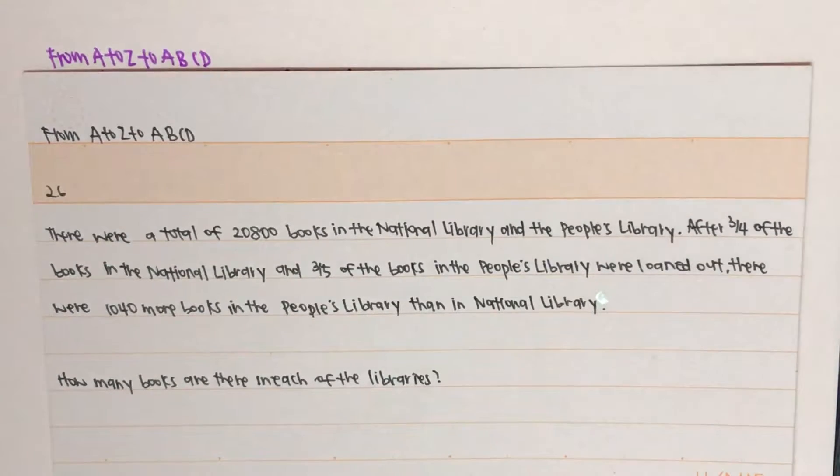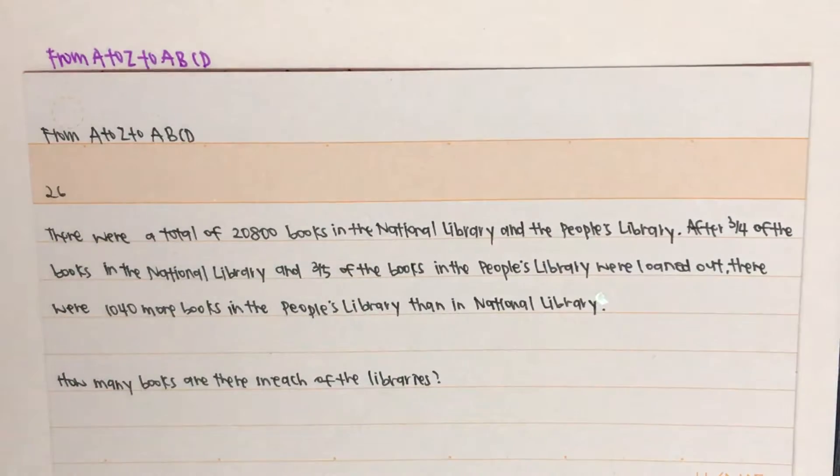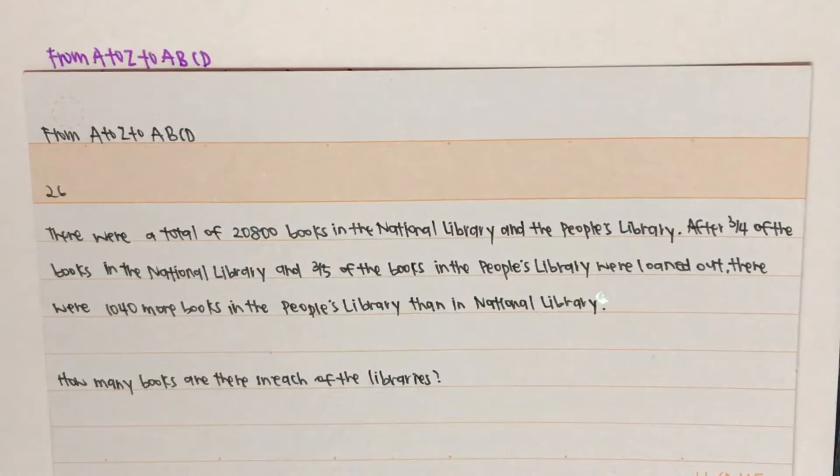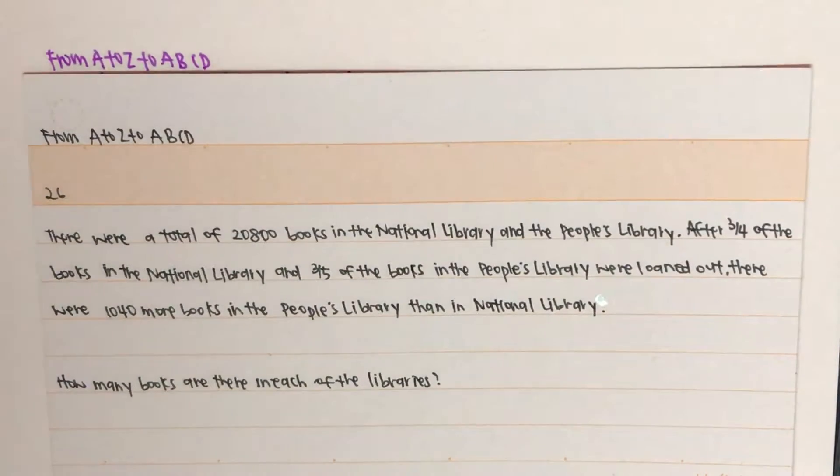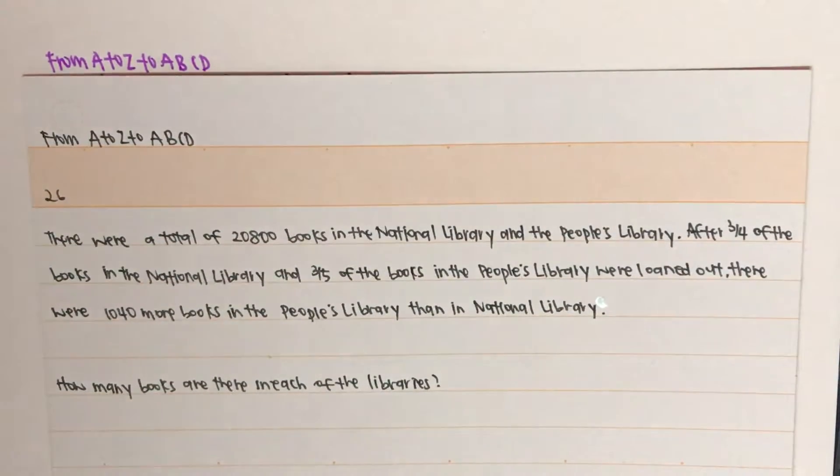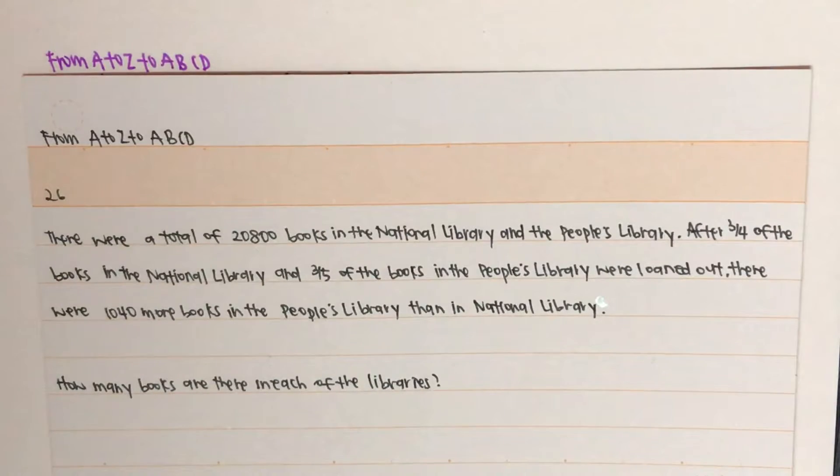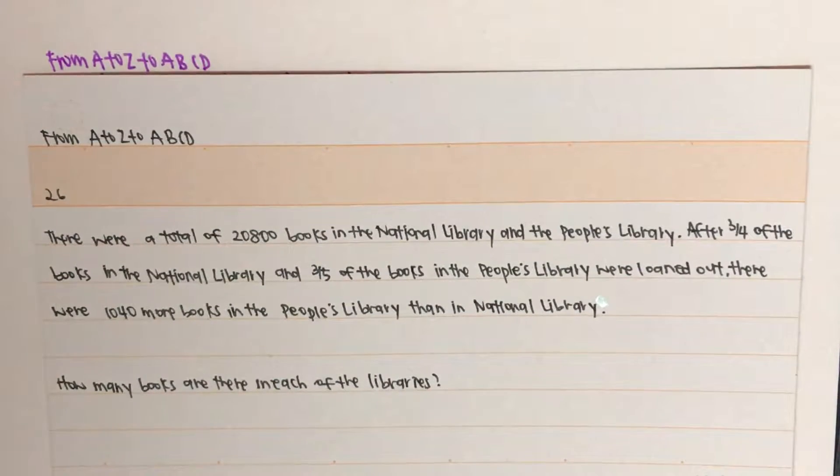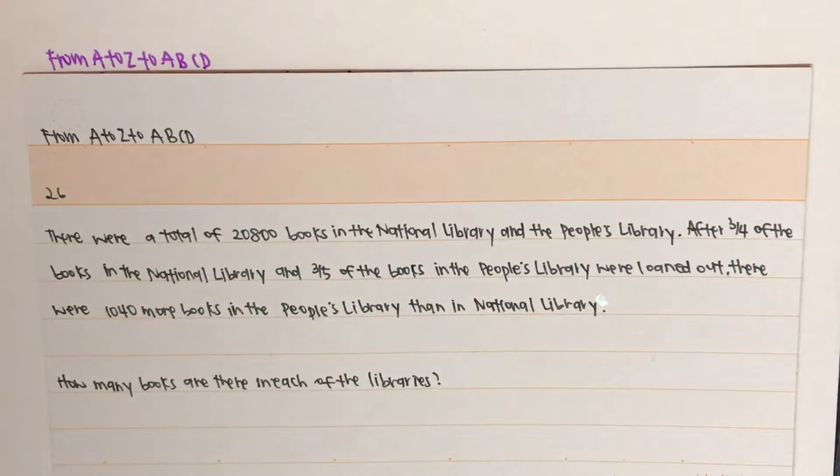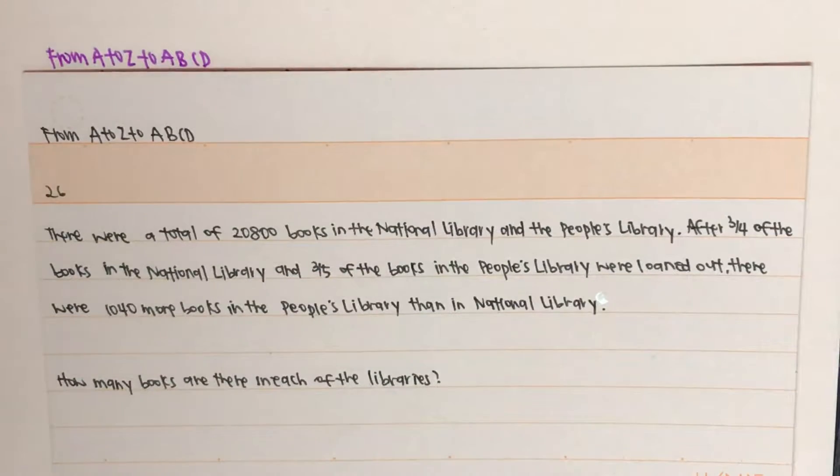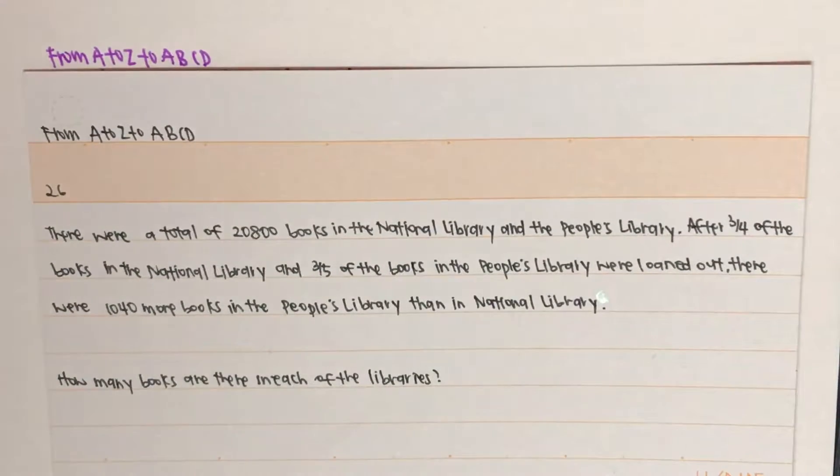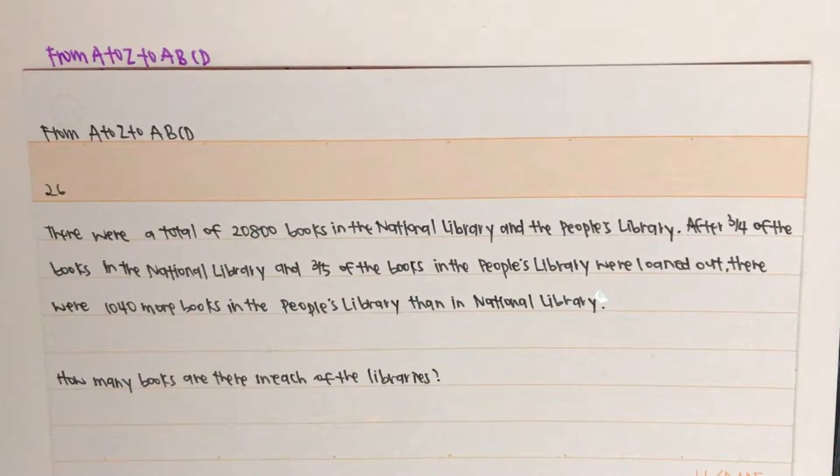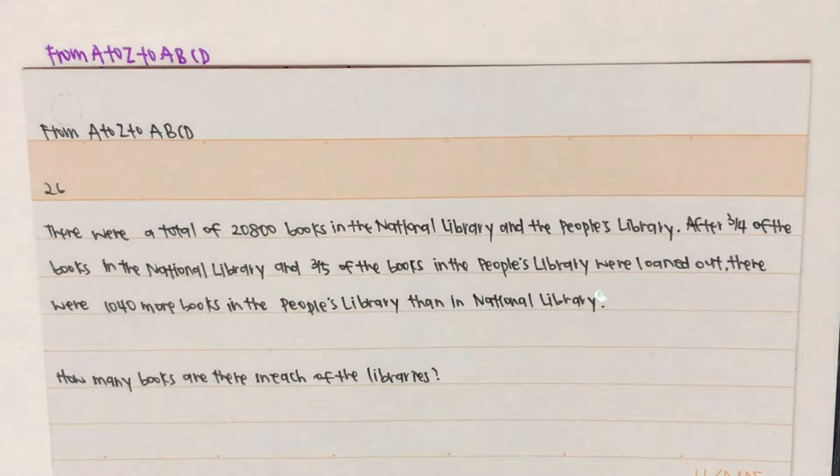Now, let's get started. There are a total of 20,800 books in the National Library and the People's Library. After three-quarters of the books in the National Library and three-fifths of the books in the People's Library were loaned out, there are 1,040 more books in the People's Library than in the National Library. How many books are there in each of the libraries?